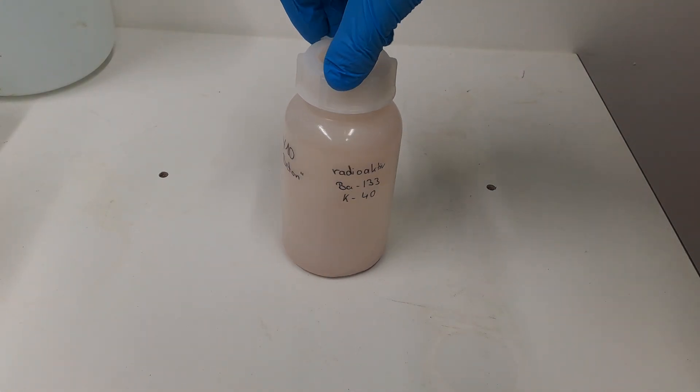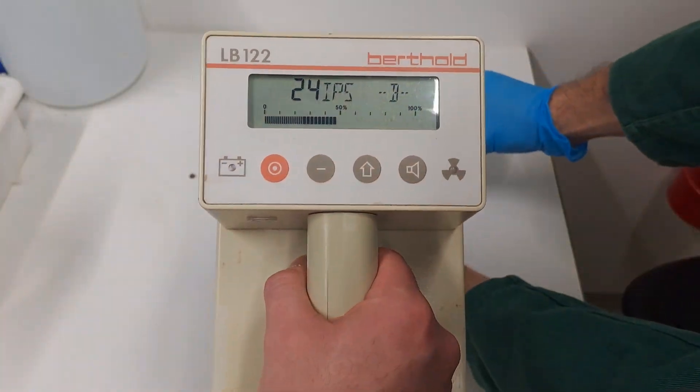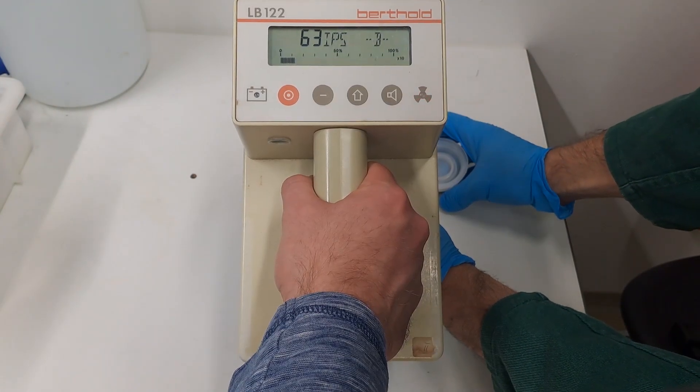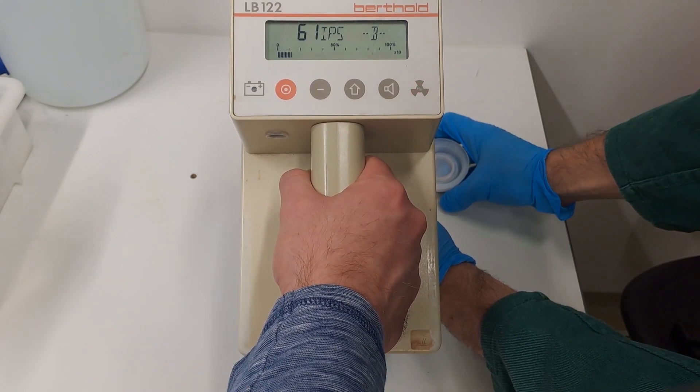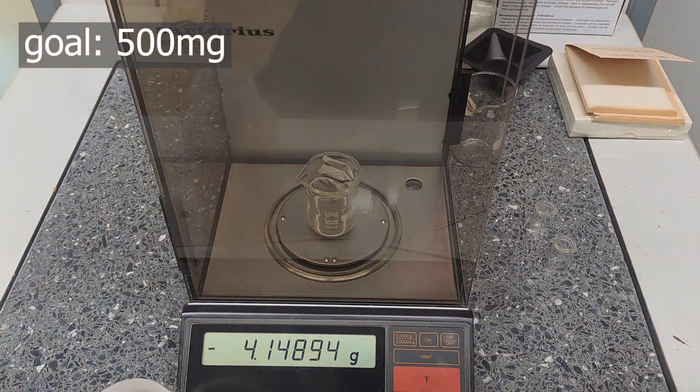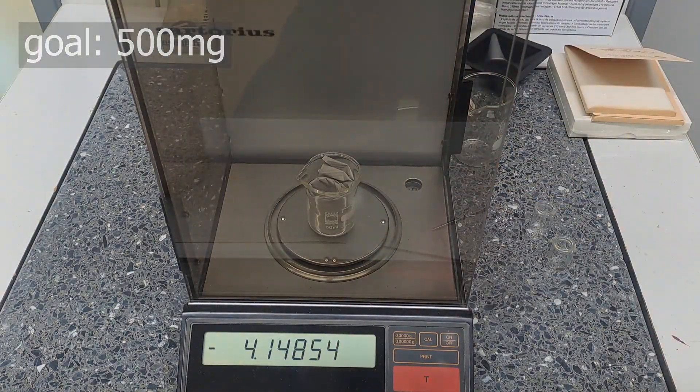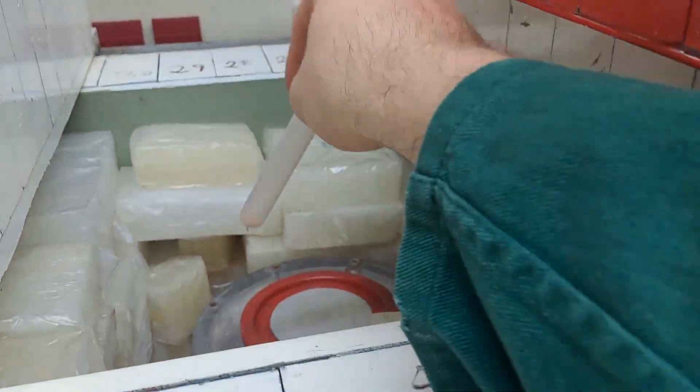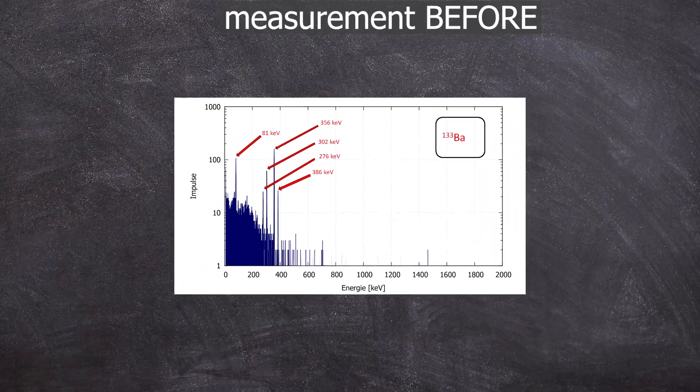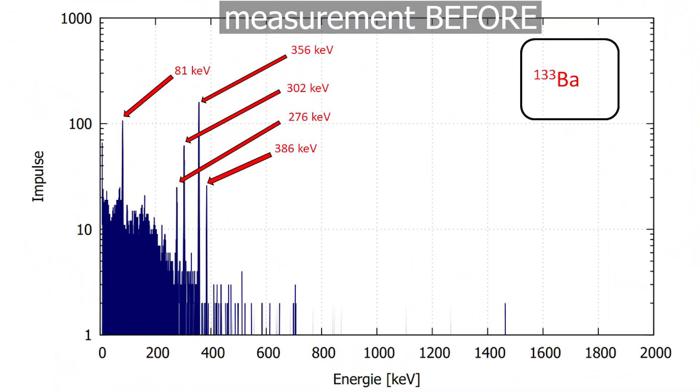Now back onto the topic, we also need radioactive concrete. Initially, 500 milligrams are weighted. To show that there really is barium-133 in there, we can measure it using the gamma spectrometer and see the barium-133 lines. All these lines should disappear after our chemical processing.